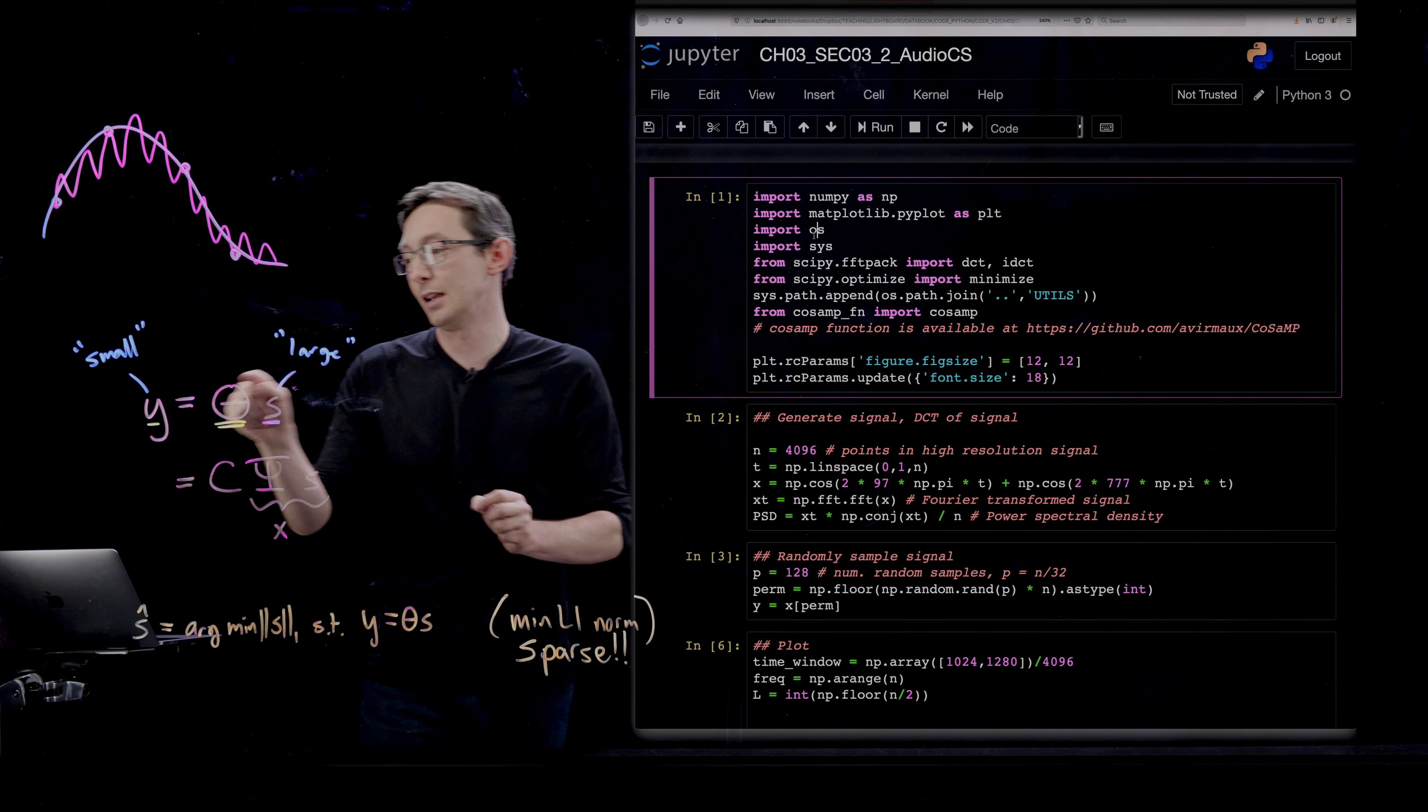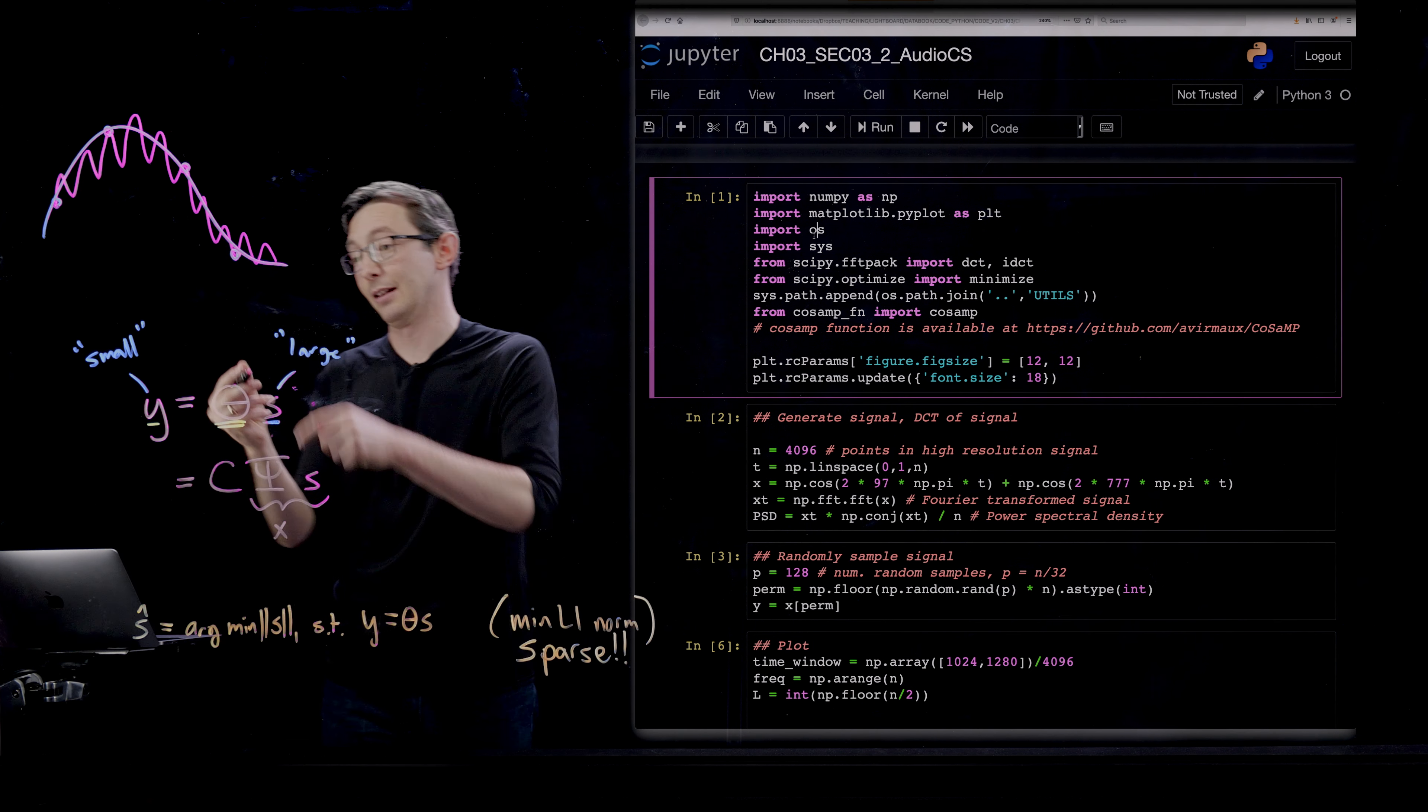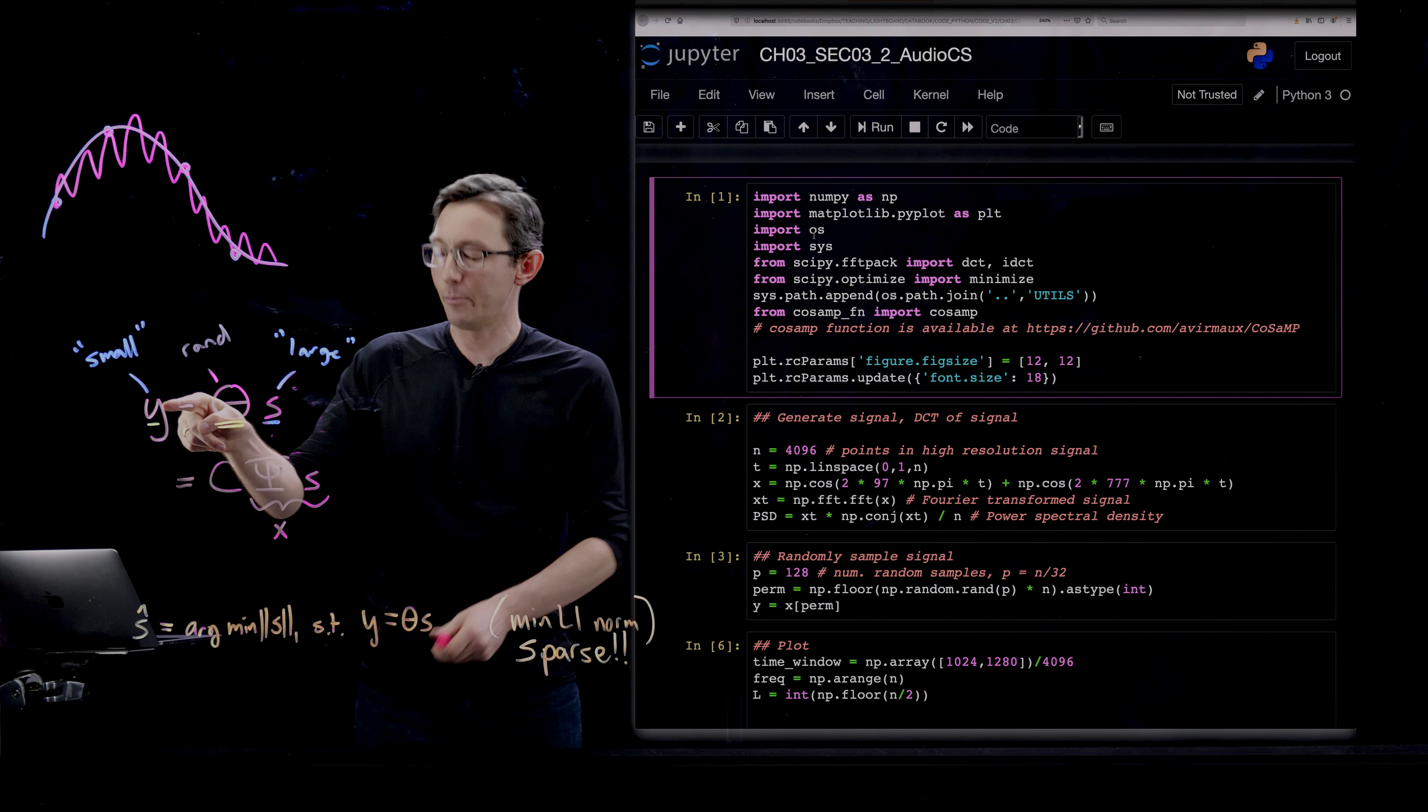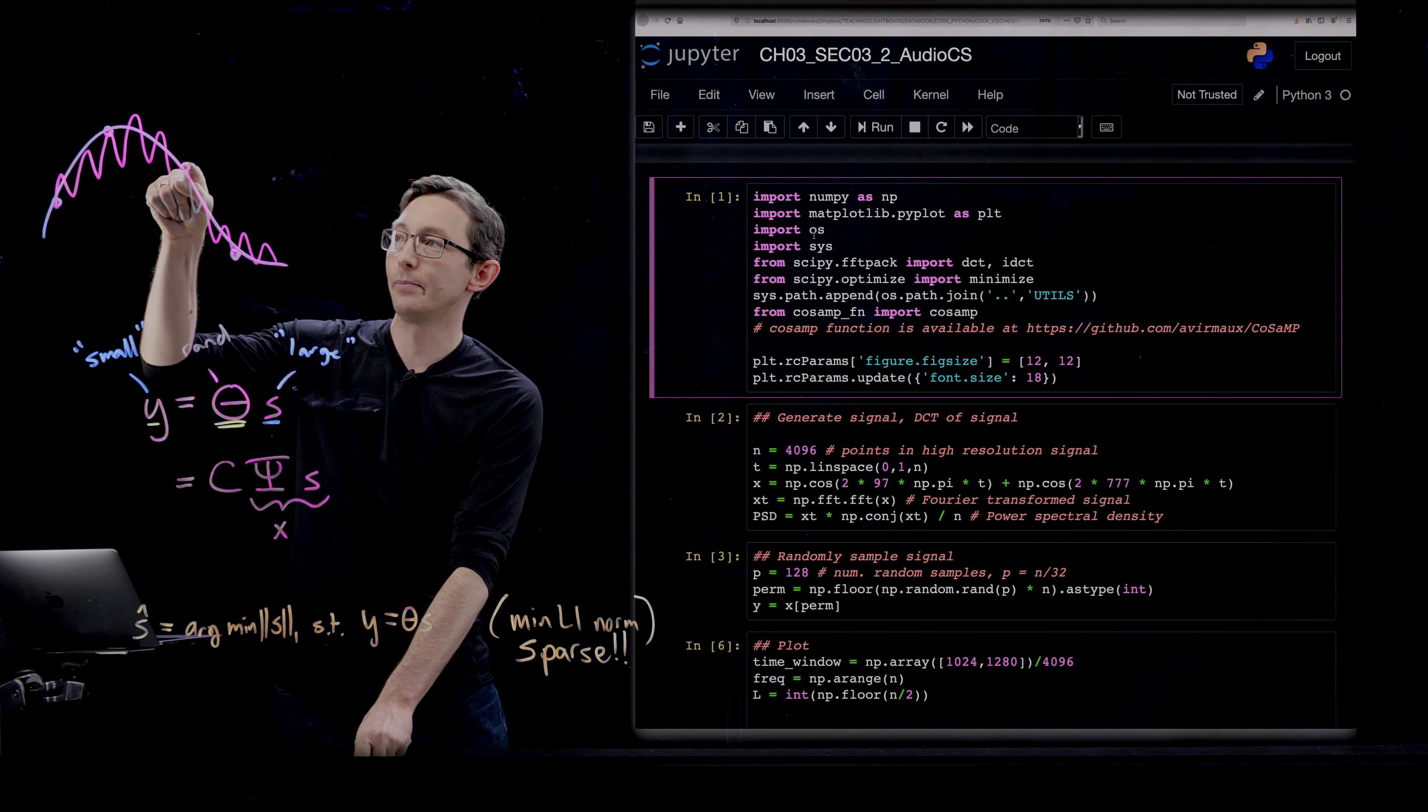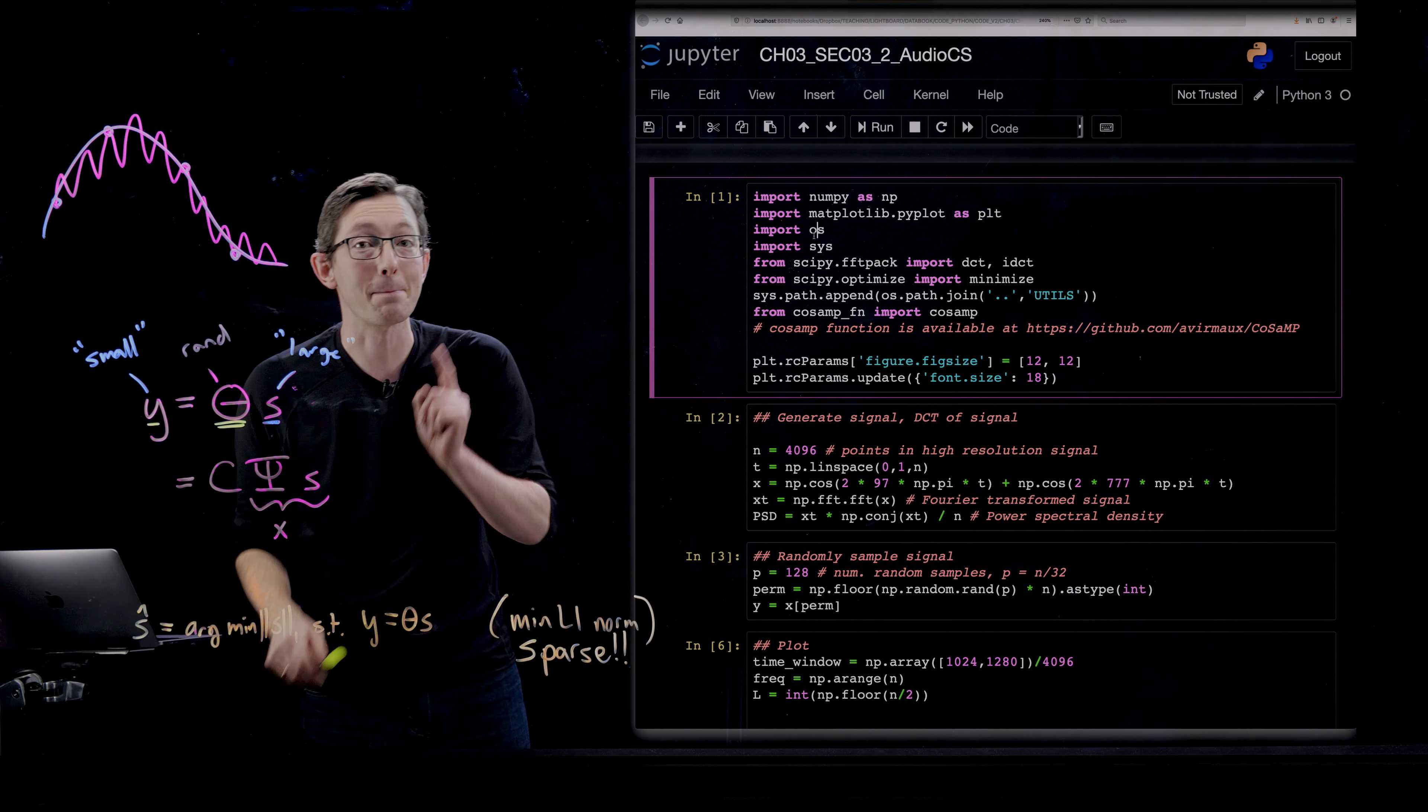But the catch with compressed sensing, the reason you can beat Nyquist here, is because this theta is random. So these y points are not uniformly sampled in time. They are randomly sampled in time and that makes a big difference.